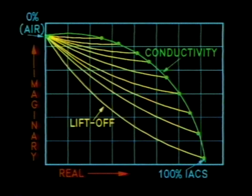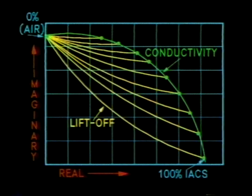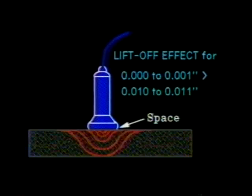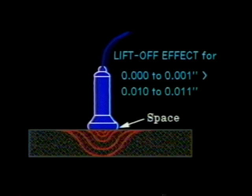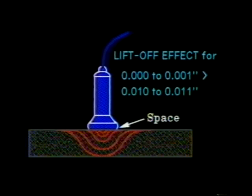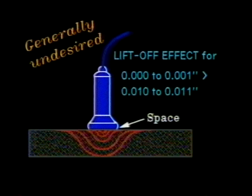The chart shows the relationship between air, conductive materials, and liftoff. The electromagnetic field is strongest near the coil and dissipates with distance from the coil. This fact causes a pronounced liftoff effect for small variations in coil-to-object spacing. For example, a spacing change from contact to 0.001 inches will produce a liftoff effect many times greater than a spacing change of 0.010 inches to 0.011 inches.